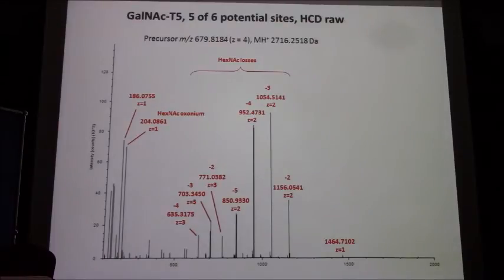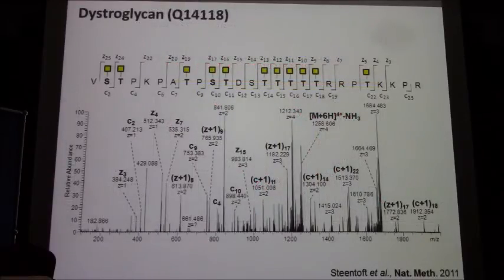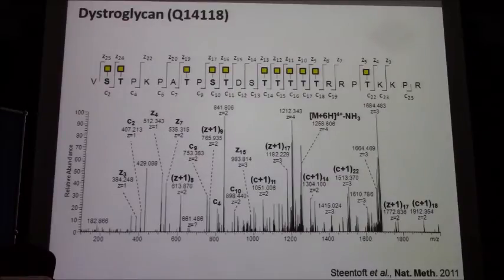This is an example where HCD alone fails — you basically see only losses of HexNAc epitope. This is a glycopeptide with potentially five sites out of six. The same precursor with ETD gives fantastic sequence coverage and allows identification of those glycosites. Another cool example we discovered with our Simple Cell approach is dystroglycan with ten potential glycosites. This was actually due to a limitation in the Proteome Discoverer sequence algorithm, which at that time was limited to ten PTMs simultaneously. We know there are cases with 12, 15, and 20 glycosites at the same time.